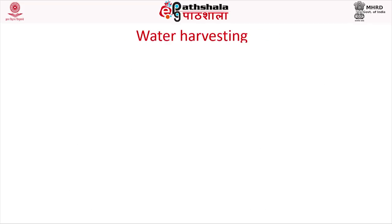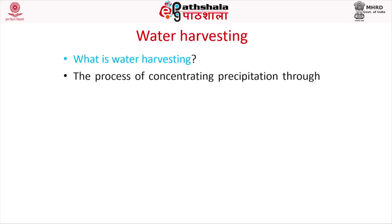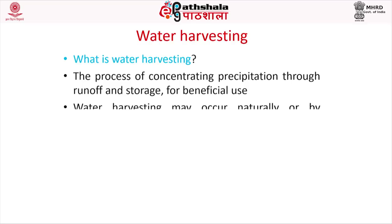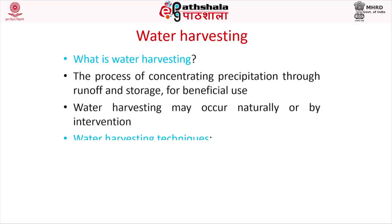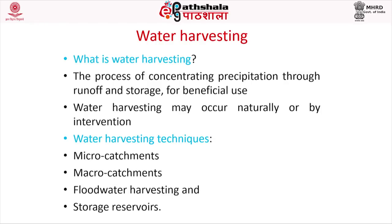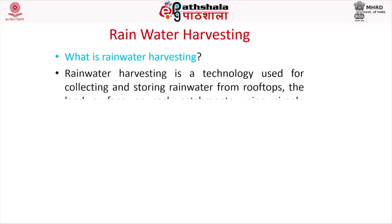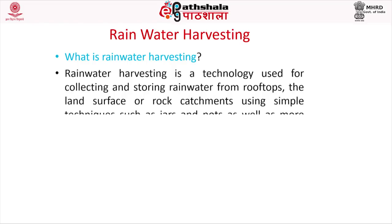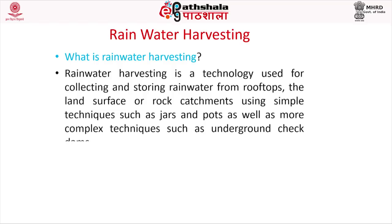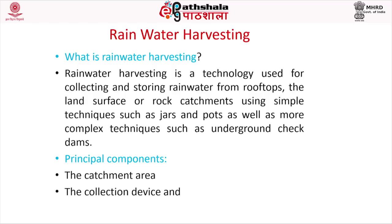Water harvesting is the process of concentrating precipitation through runoff and storage for beneficial use. It may occur naturally or by intervention. Different water harvesting techniques include micro catchments, macro catchments, flood water harvesting, and storage reservoirs. Rainwater harvesting is a technology used for collecting and storing rainwater from rooftops, land surfaces, or rock catchments using simple techniques such as jars and pots, as well as more complex techniques such as underground check dams. Principal components include the catchment area, collection device, and conveyance system.